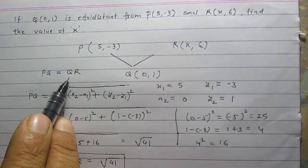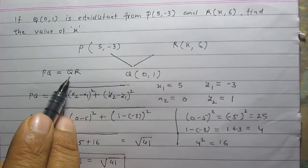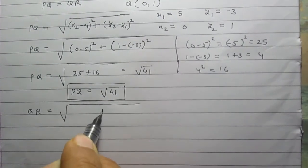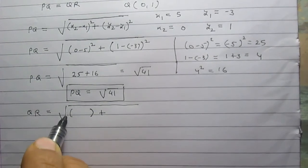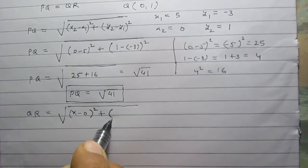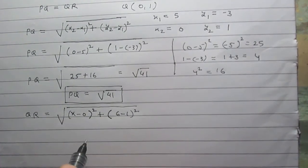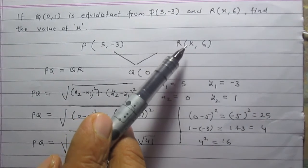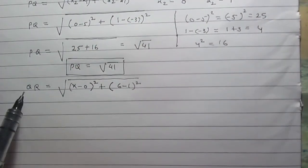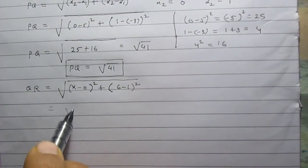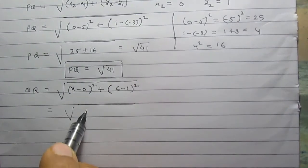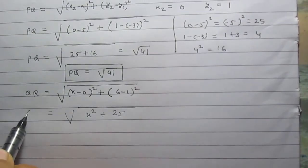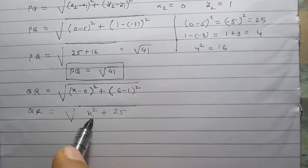Now let us find distance QR. Using the distance formula, QR is equal to the square root of (x minus 0) whole square plus (6 minus 1) whole square. Since coordinates of Q are 0 and 1, and coordinates of R are x and 6, QR is equal to the square root of x squared plus 5 squared, which equals the square root of x squared plus 25.